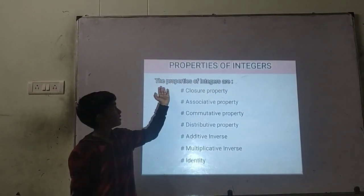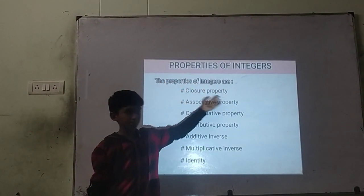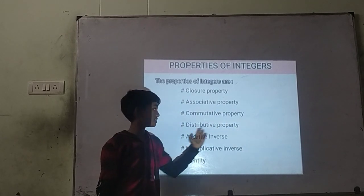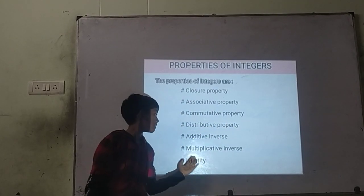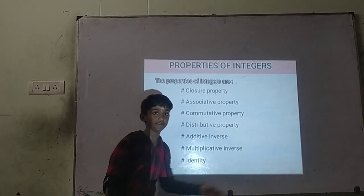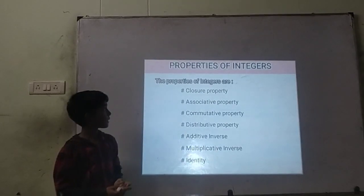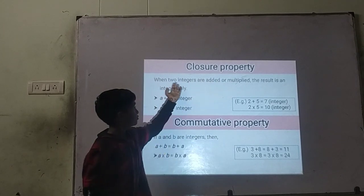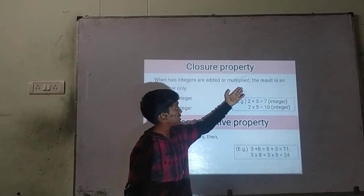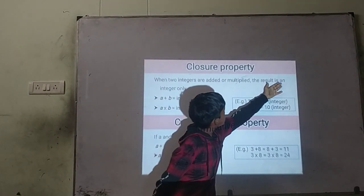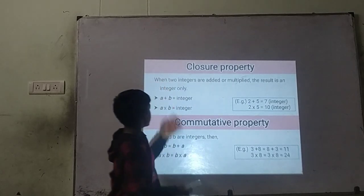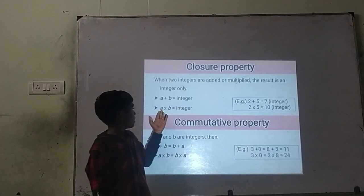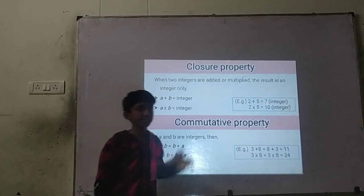Properties of integers. The properties of integers are: closure property, associative property, commutative property, distributive property, additive inverse, multiplicative inverse, and identity. Closure property: when two integers are added or multiplied, the result is an integer. For example, A plus B is equal to an integer.